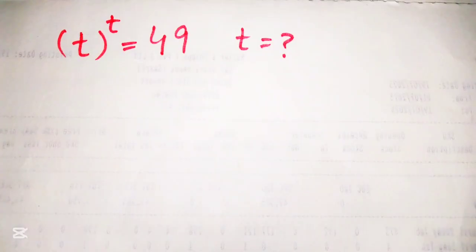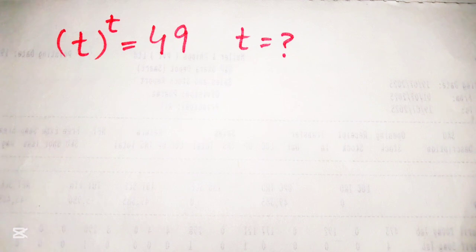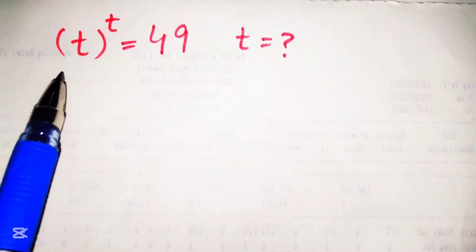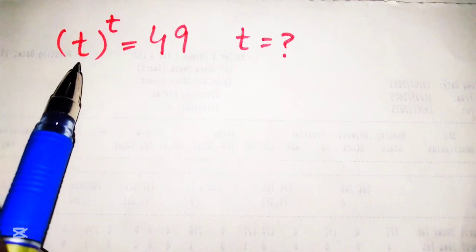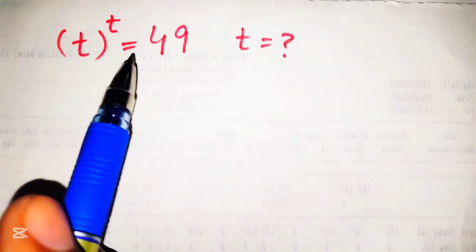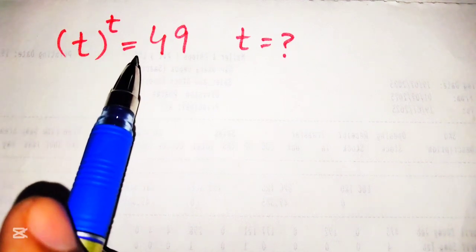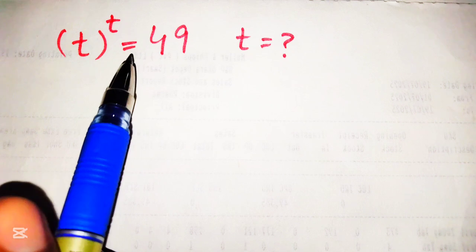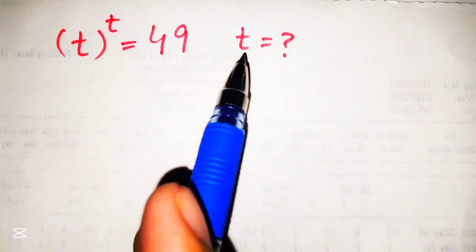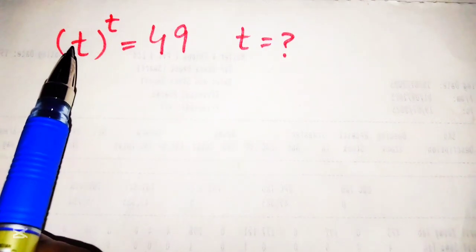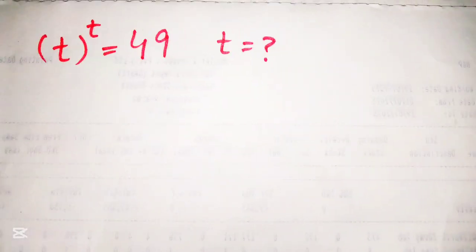Hello guys, welcome to my YouTube channel Olympiad Edge, hopefully you are doing fine. Today we are going to solve a very nice exponential equation which is given as t raised to the power t is equal to 49, and we have to find the value of t here.